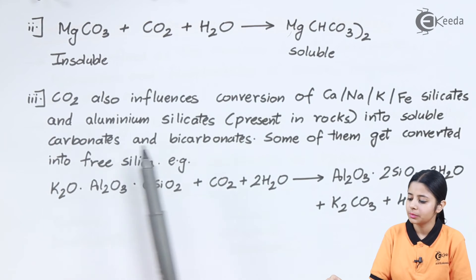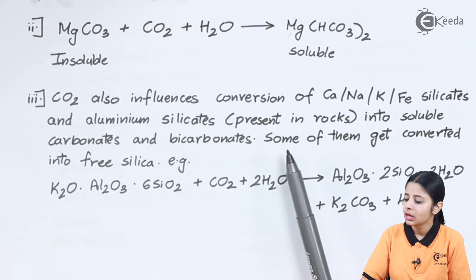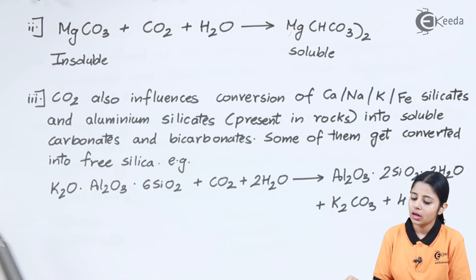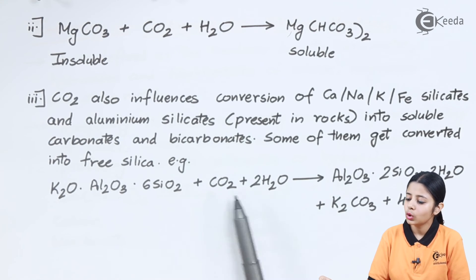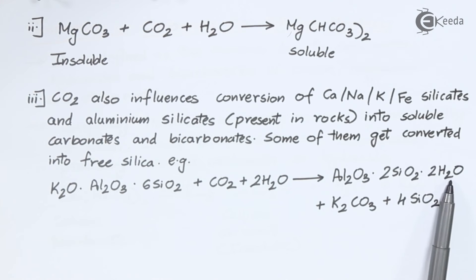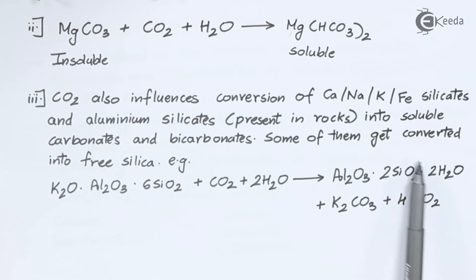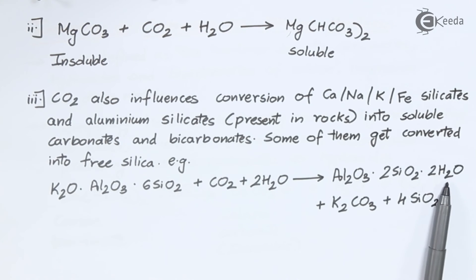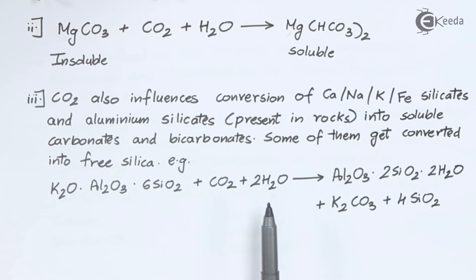CO2 also influences conversion of calcium, sodium, phosphorus, iron silicates, and aluminium silicates present in rocks into soluble carbonates or bicarbonates; some form free silica. For example: K2O + Al2O3 + 6SiO2 + CO2 + H2O → Al2O3·2SiO2·2H2O + K2CO3 + 4SiO2. Water attaches to the aluminium-silica salt via water of crystallization, making it soluble. Minerals that were previously insoluble have now become soluble, converting pure water into hard water.